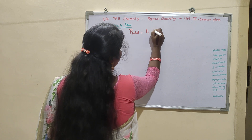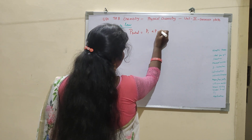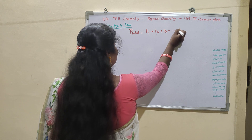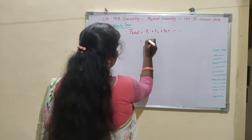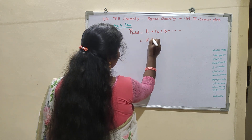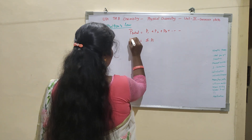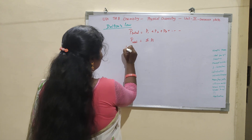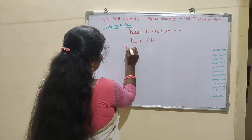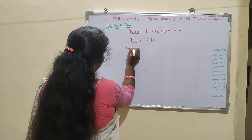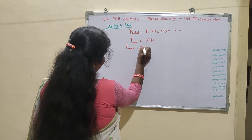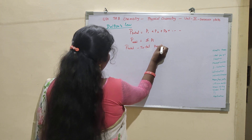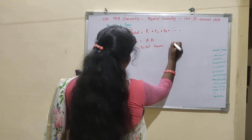For example, P1, P2, P3 — there are three gases. P total is equal to sigma Pi. So P total is equal to sum of Pi. This means total pressure, and Pi is partial pressure.